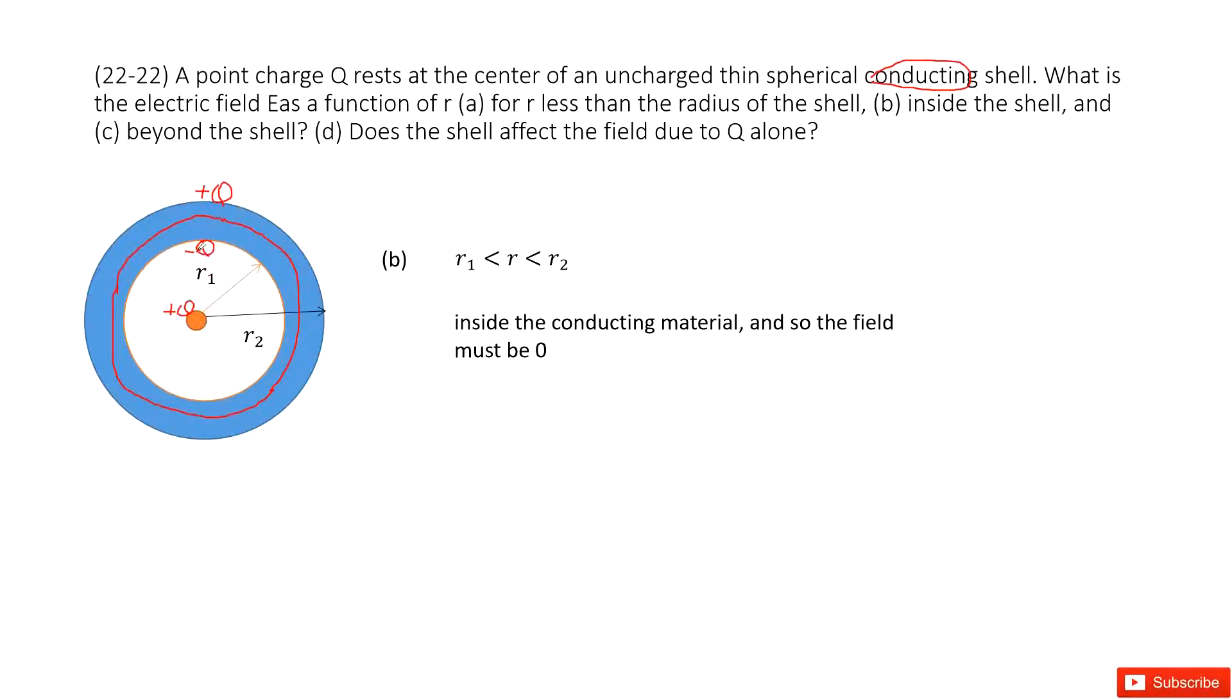The net enclosed charge is 0. Because this is positive Q, the inner surface is negative Q. So the enclosed charge is 0. That makes the electric field at this inner surface is just 0.